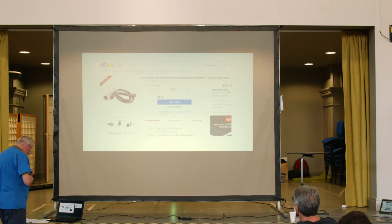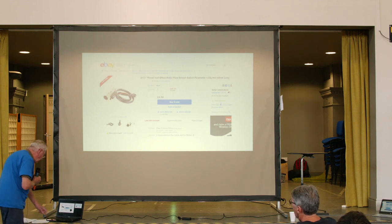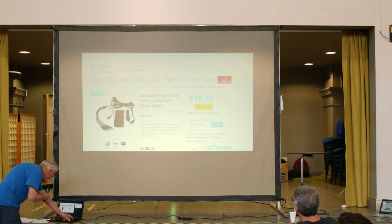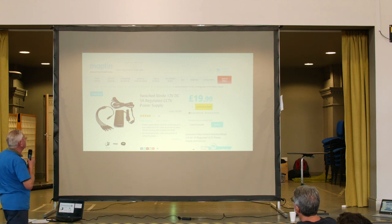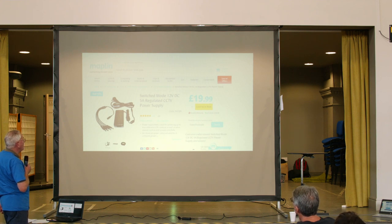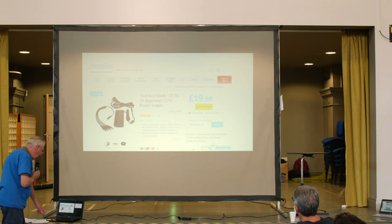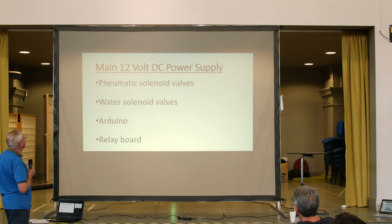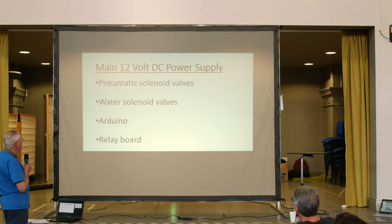Soil moisture and water level sensors I'm going to come back to at the end. That's the power supply I've used — very handy, a CCTV power supply. Four 12-volt DC outputs, which were very conveniently used: one for the pneumatics, one for the water solenoids, one for the Arduino board, and one for the relay board.